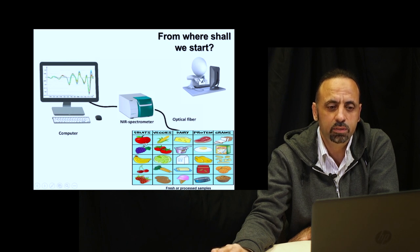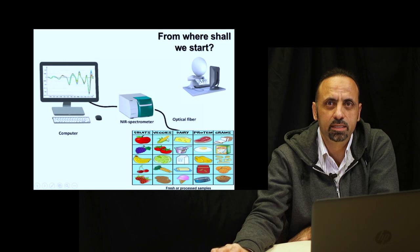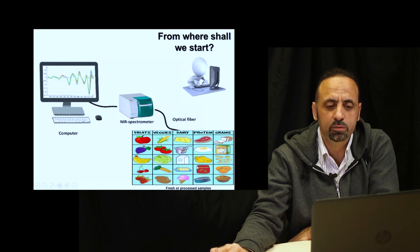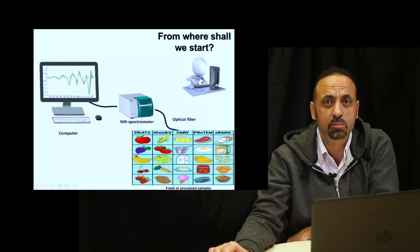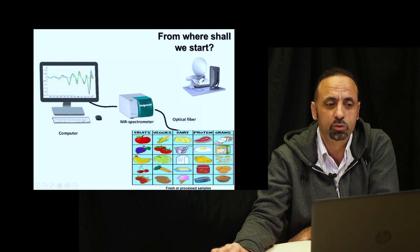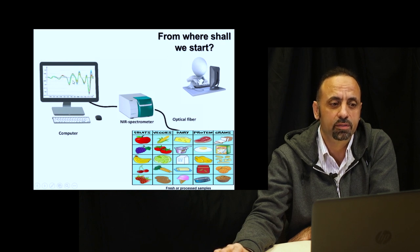Either you can use optical fiber optic to sense the samples and then transfer the spectral data directly to the spectrometer, or you can use a liquid sample using, for example, a cuvette and put it inside the spectrometer. Then you have the data saved in your computer.